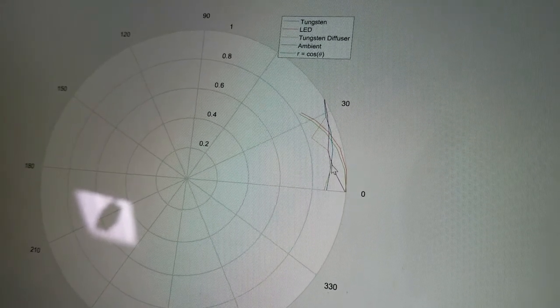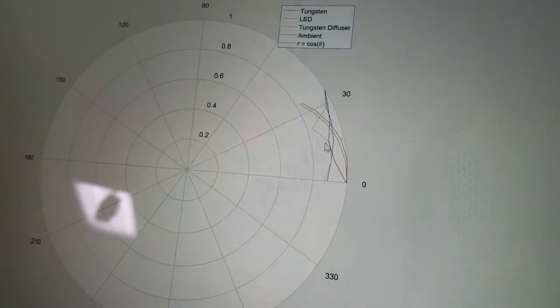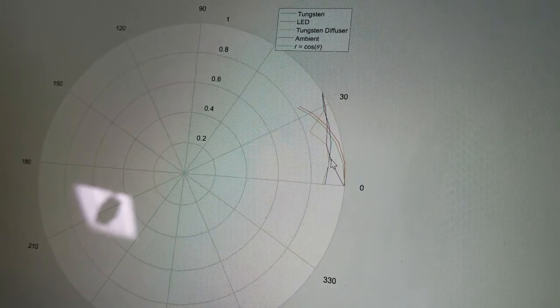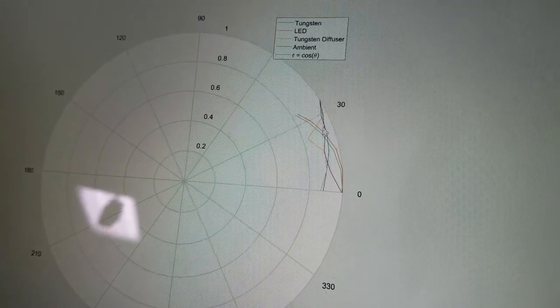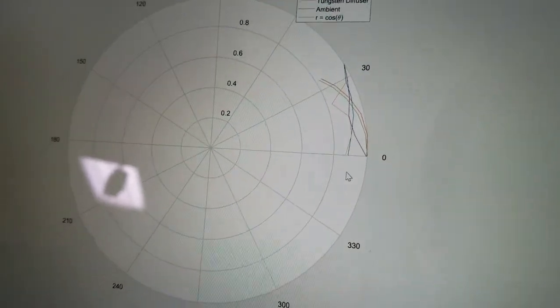And then the other curves here, this purple curve is our ambient. This is important because you can see that it's actually angle-dependent. It isn't just the same intensity over the angle values.